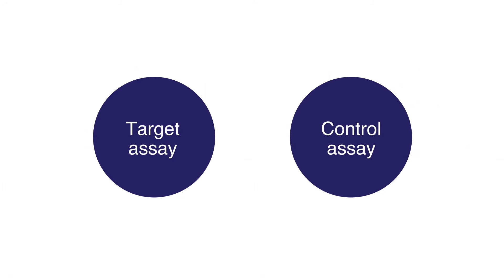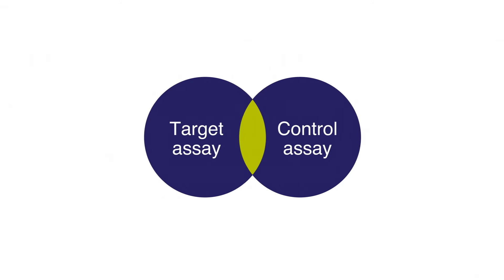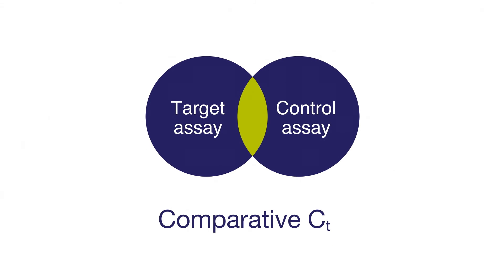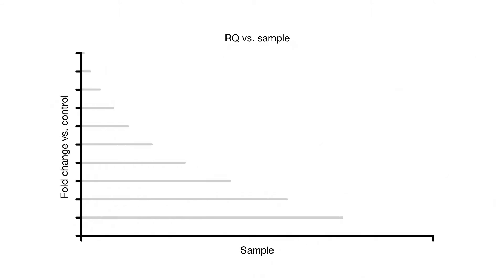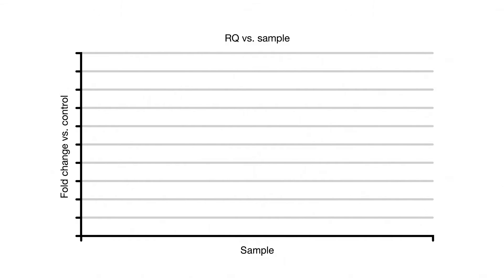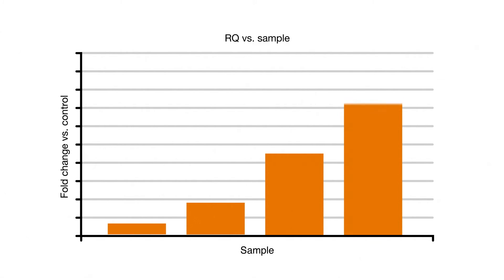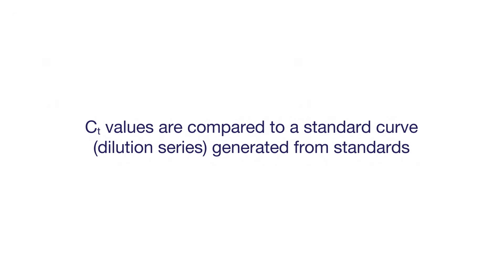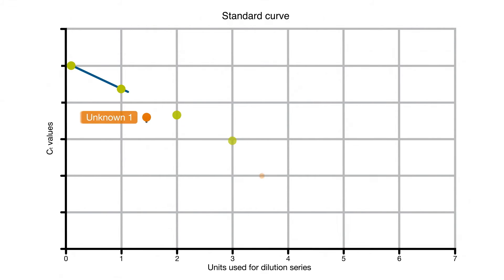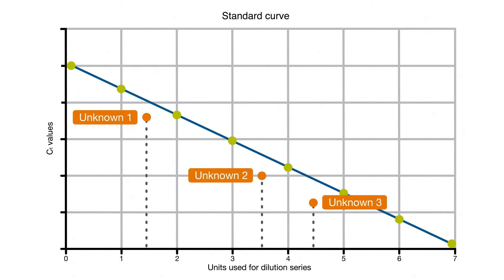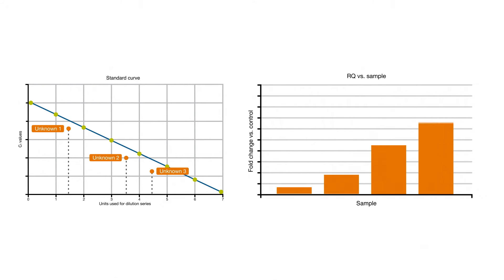If the target and endogenous control assay efficiencies are comparable, use comparative CT. In this method, the normalized delta-CT for the test sample is compared to the normalized delta-CT for the reference sample. If your assays have sub-optimal PCR efficiencies, you'll be better off using a relative standard curve. Once the data is analyzed, you can view your fold change or relative quantification data as plots or RQ values.